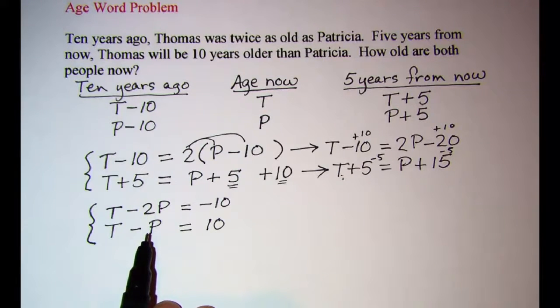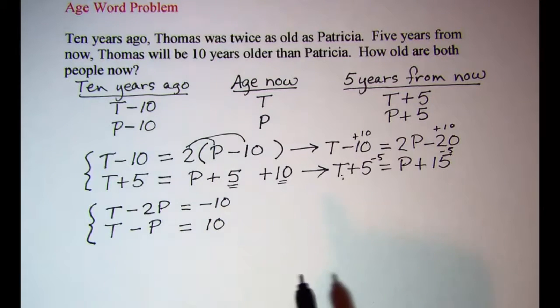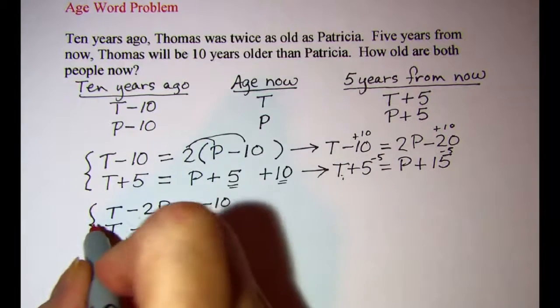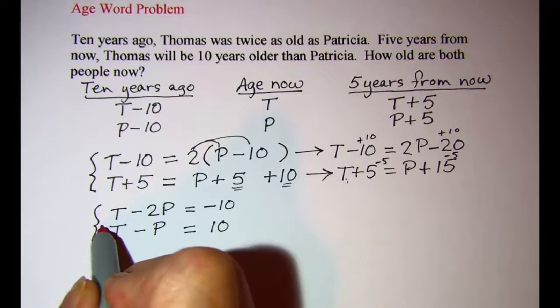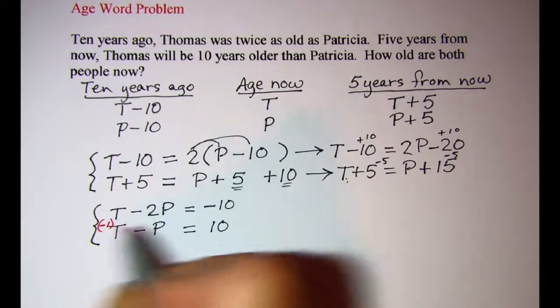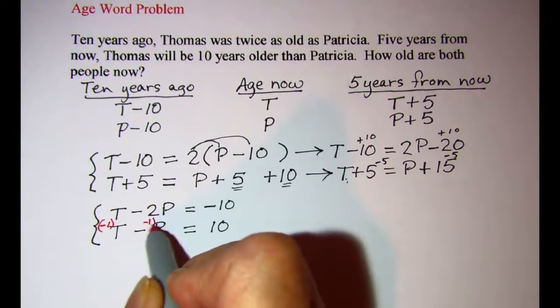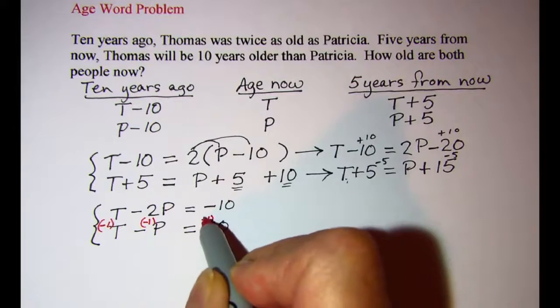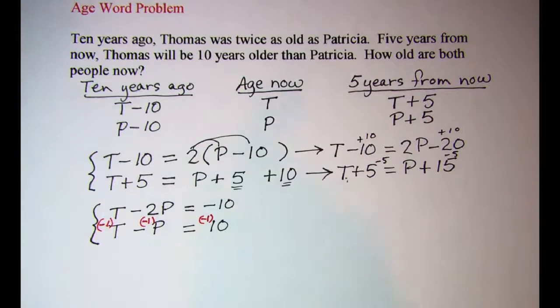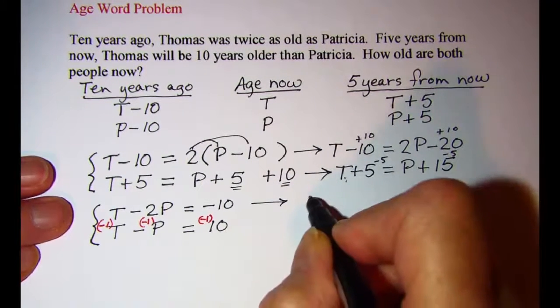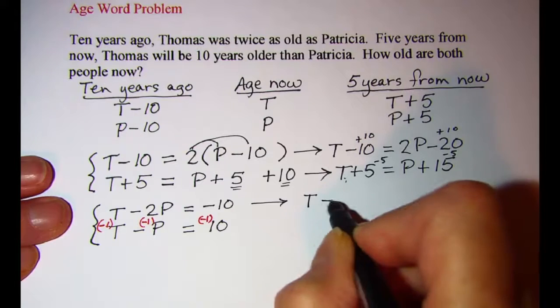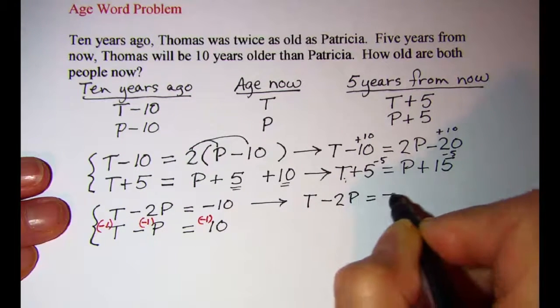Now you can choose what method to solve this system, either elimination or substitution. My preference is elimination, so I'm going to multiply every term on the second equation by a negative one.